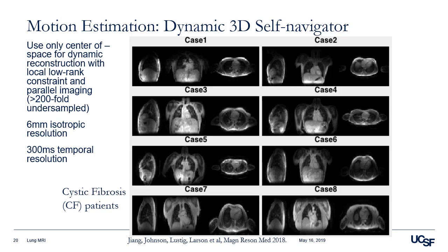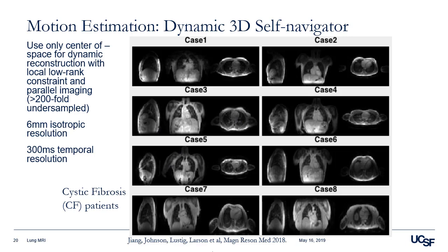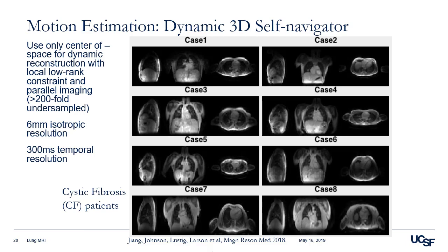I like this example in cystic fibrosis subjects scanned in Wisconsin. When you put this reconstruction on a bunch of different subjects, you see the range of variation in breathing patterns from shallow to deep. Some subjects were quite regular breathers, but others were coughing at some point or taking deep breaths and shallow breaths — maybe were a little bit nervous.